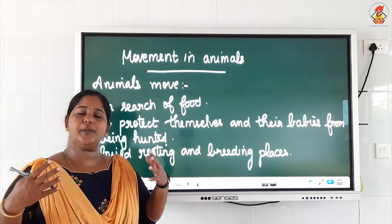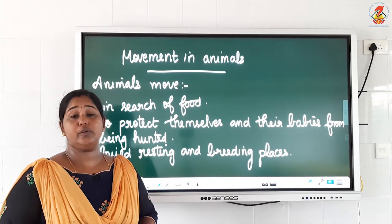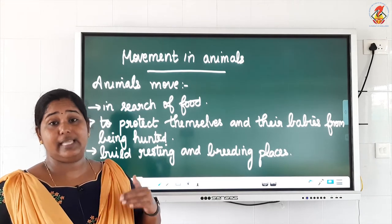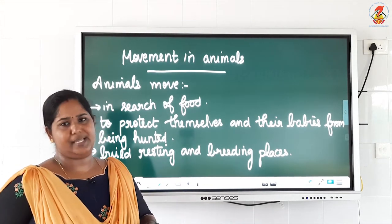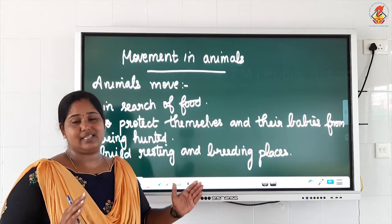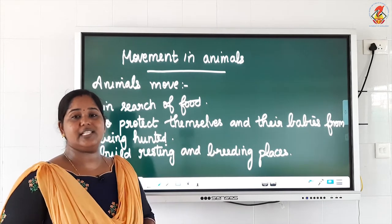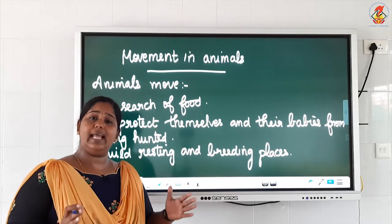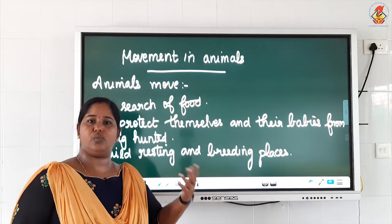The second reason animals move is to protect themselves and their babies from being hunted. If enemies come to attack them, they will run away — wherever they see a way they will go through. The third main reason is to find a resting and breeding place — a proper peaceful place to rest and to produce their young ones, to give birth or to lay eggs. So the three important reasons are: in search of food, to protect themselves and their babies, and to find resting and breeding places.